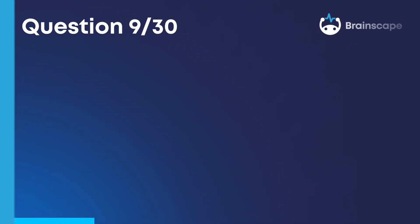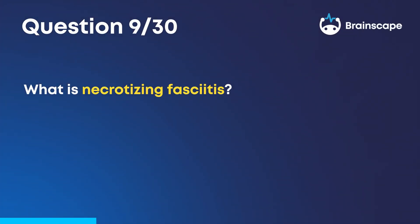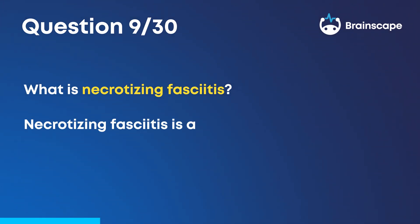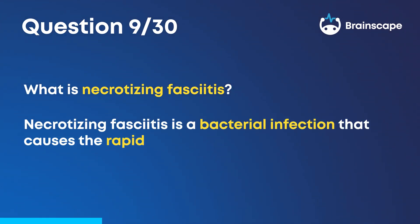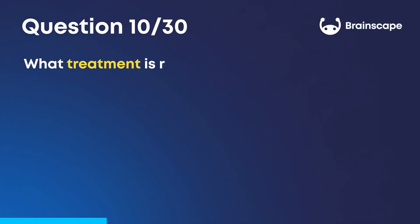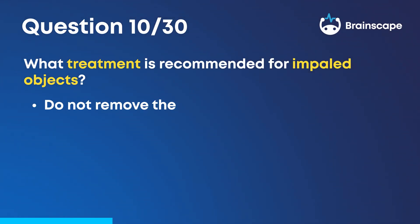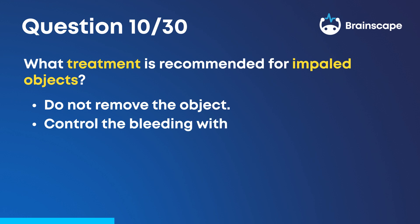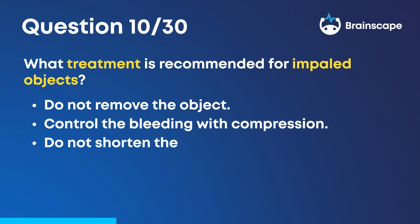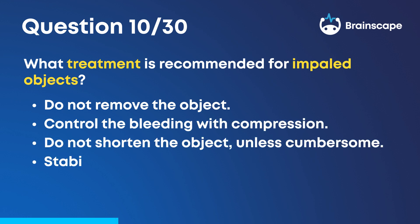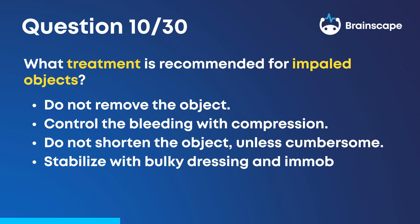Question 9. What is necrotizing fasciitis? Necrotizing fasciitis is a bacterial infection that causes the rapid death of tissue. Question 10. What treatment is recommended for impaled objects? Do not remove the object, control the bleeding with compression, do not shorten the object unless cumbersome, and stabilize with bulky dressing and immobilize if possible.